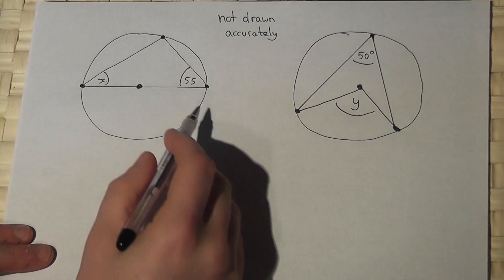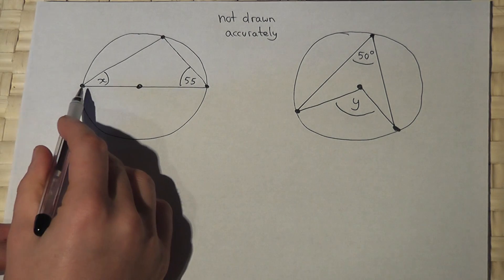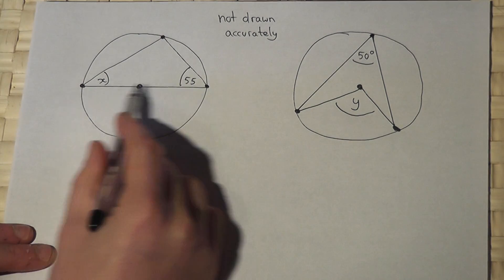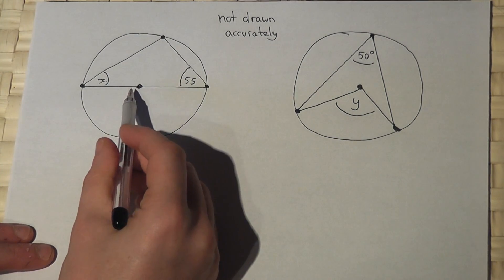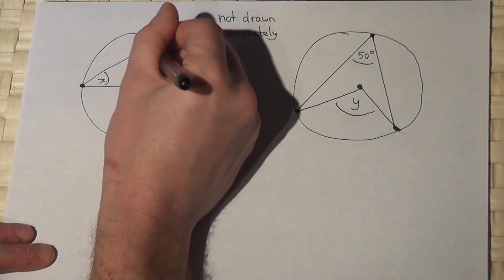Now then, if we have a circle and a triangle where the triangle passes through the centre of the circle, then the angle opposite, in this case the diameter, will equal 90.